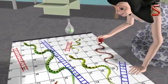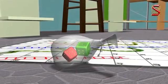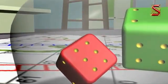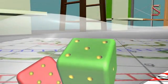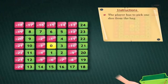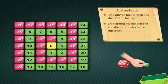They opened the game and laid it out on the floor. The game had two dice, one red and one green inside a bag. The instructions said that the player has to pick one dice from the bag, depending on the color of the dice. The rules were different.